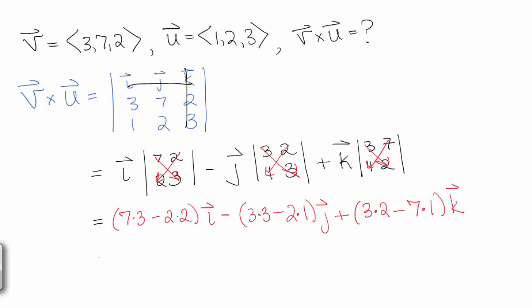And then we can simplify that a little bit. We have 21 minus 4, so 17I, minus 9 minus 2, so 7J, plus 6 minus 7, so minus K.